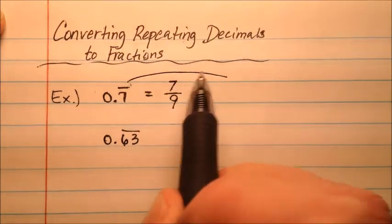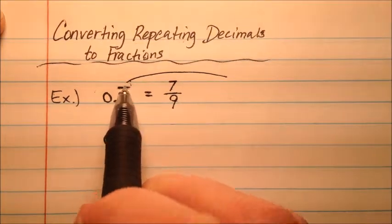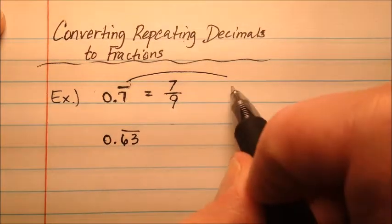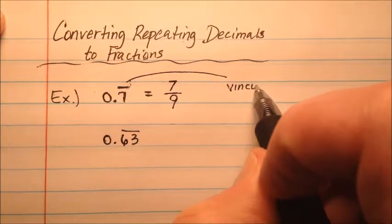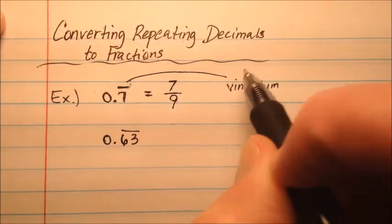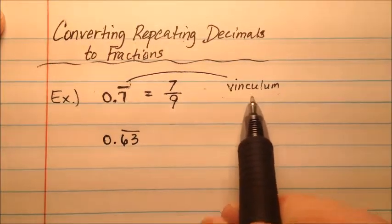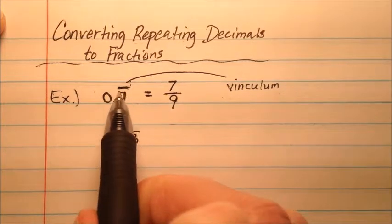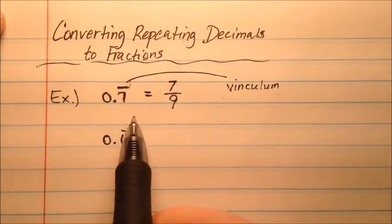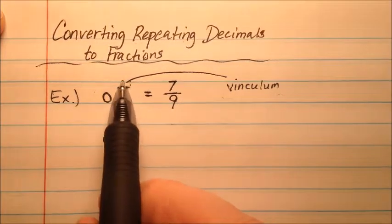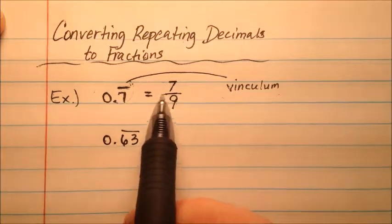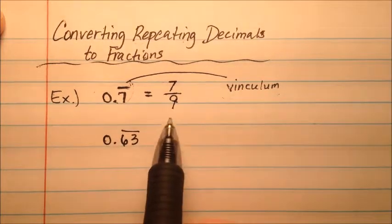And what, just for kicks, what is this bar called? Well, it's called a vinculum. It's a Latin term. So our repeating decimals have this bar over them that indicate they're going to repeat forever. And when they repeat, we're going to put them over 9s. So one repeating decimal goes over a single 9.